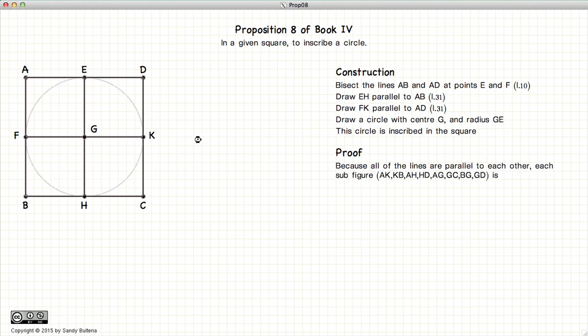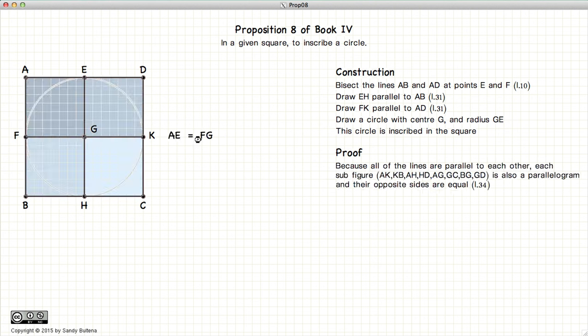To prove this, now because all the lines are parallel to each other, AF is equal to EG is equal to DK, which is equal to FB, GH, and KC. And similarly, all of these individual lines are equal to each other.